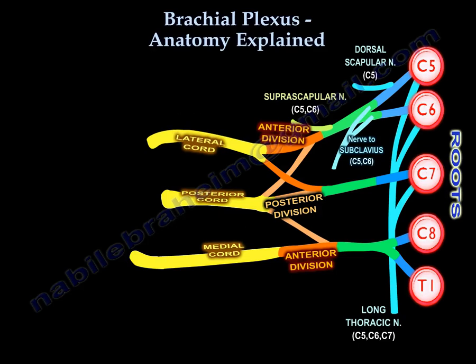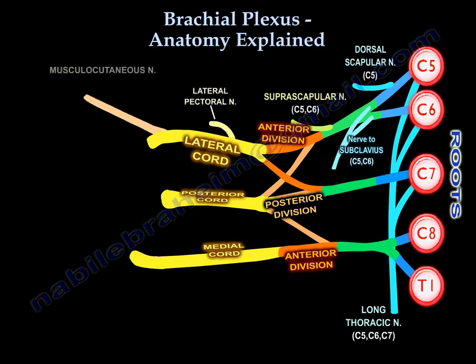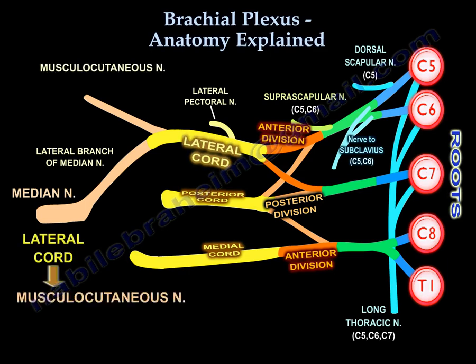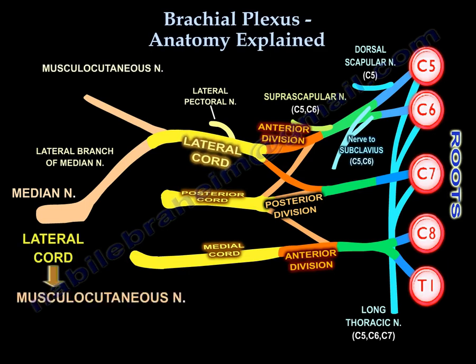The lateral cord gives three branches: the lateral pectoral nerve, the musculocutaneous nerve, and the lateral branch of the median nerve. Just remember — the lateral cord supplies the musculocutaneous nerve.